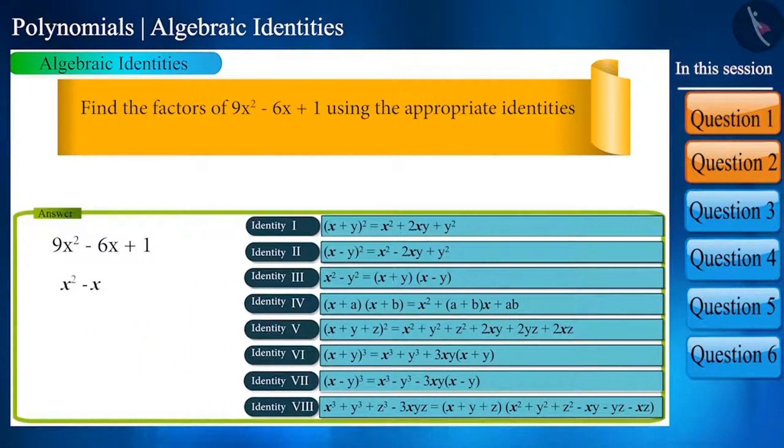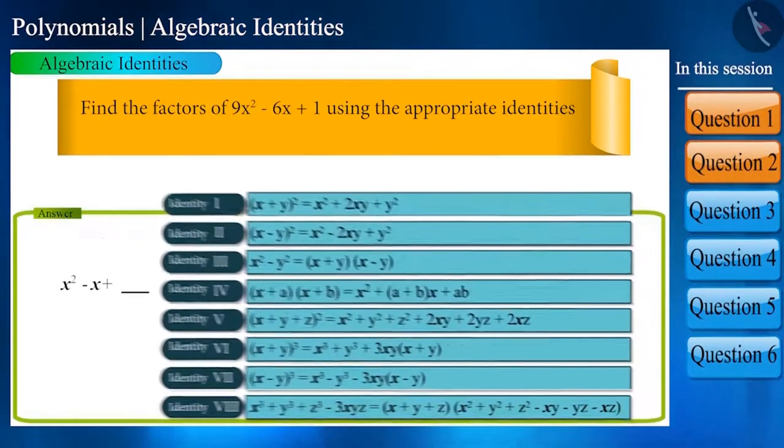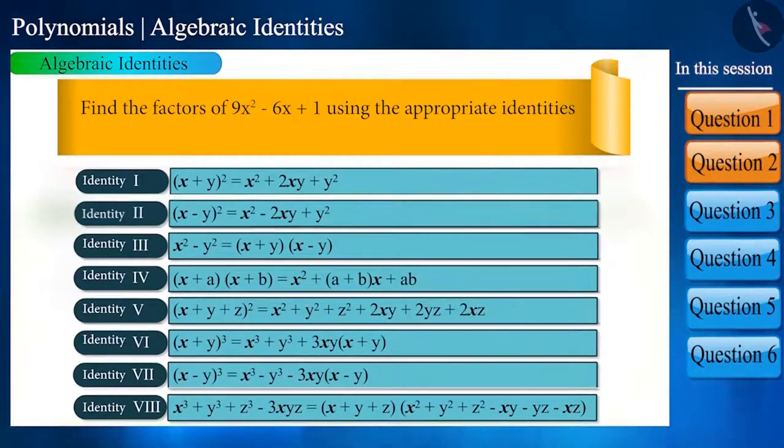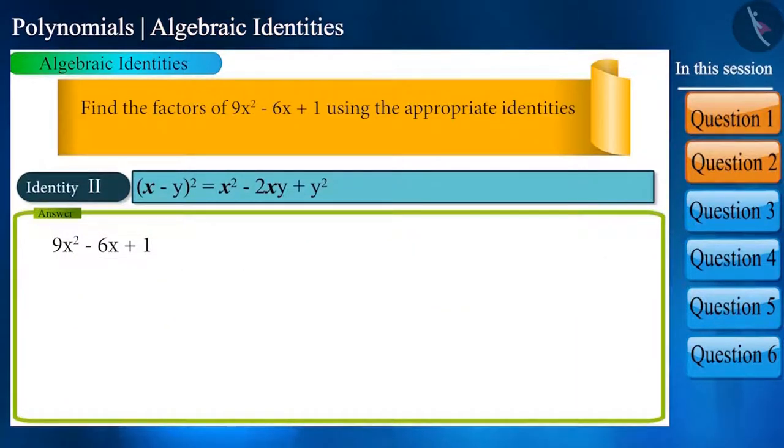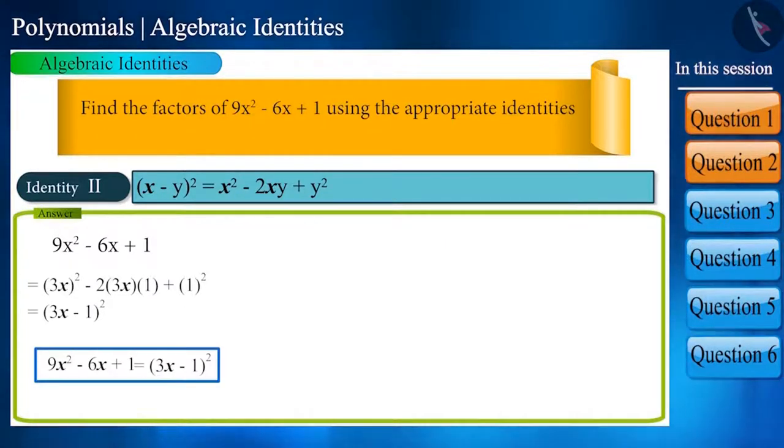Doesn't this look like identity 2? If we write it like this: (3x)² - 2(3x)(1) + (1)², then this becomes equal to (3x - 1)². Let's go ahead and take the next question.